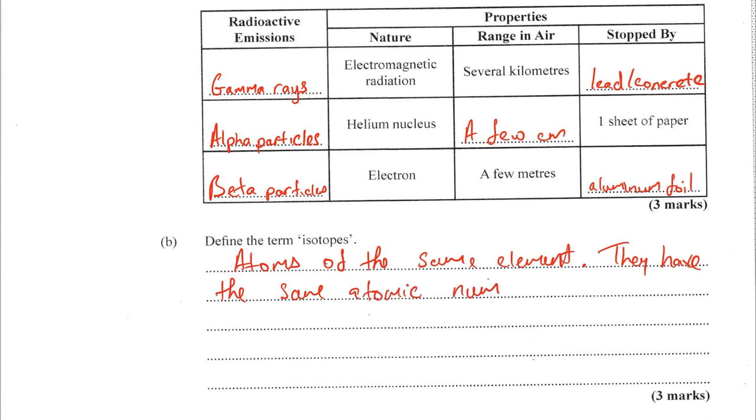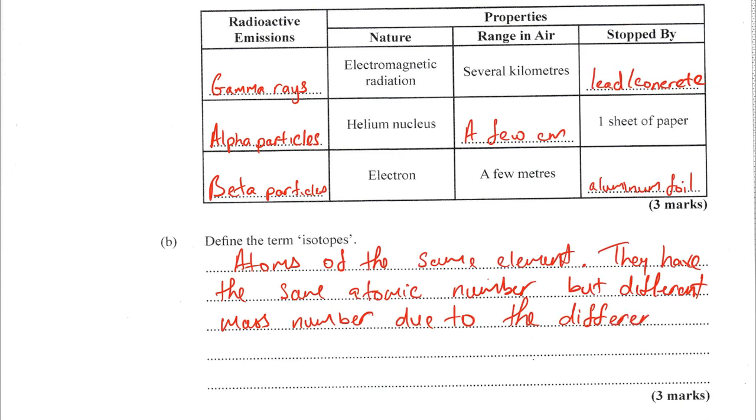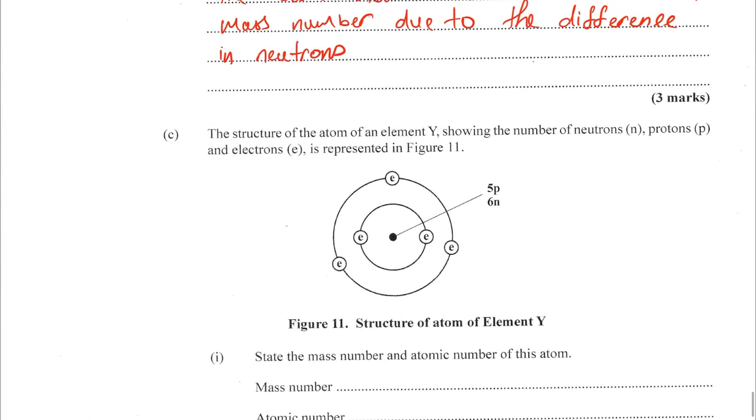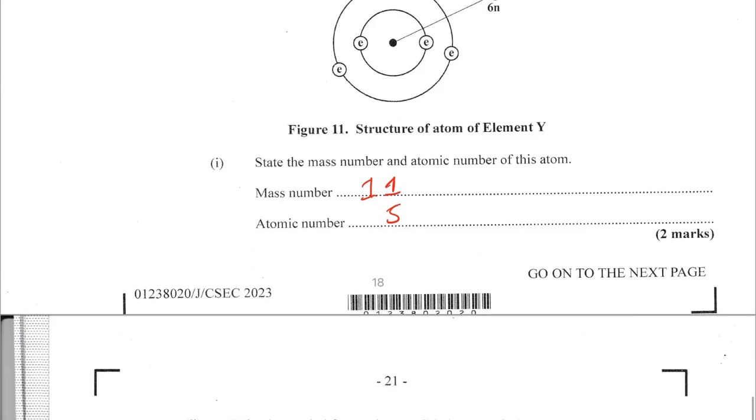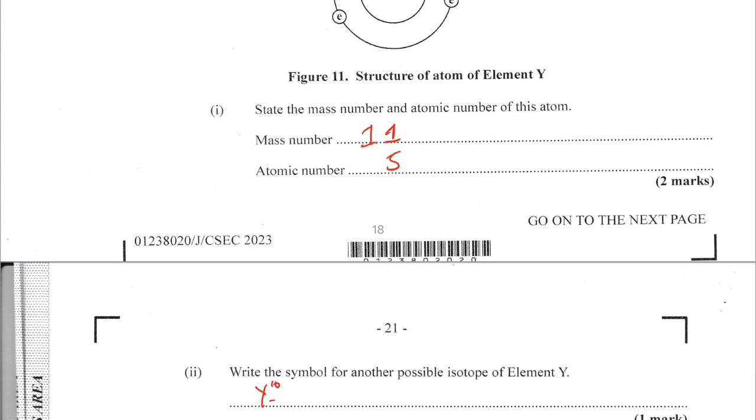Define the term isotopes: isotopes are atoms of the same element that have the same atomic number but different mass numbers, due to a difference in the number of neutrons. Question C: the structure of atom Y shown in figure 11 has a mass number of 11 (sum of protons and neutrons) and an atomic number of 5 (number of protons). One possible isotope would have mass number 10 and atomic number 5.